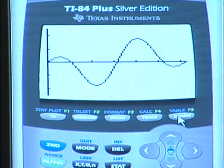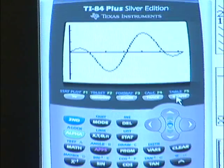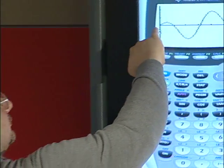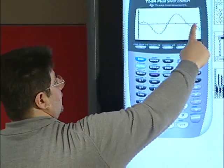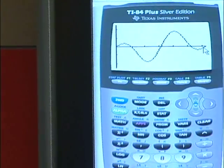We will find the set of x values for which the expression was positive. Now, this is 0. This is 2π, and this is right in between. This is the middle.